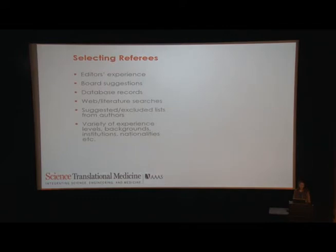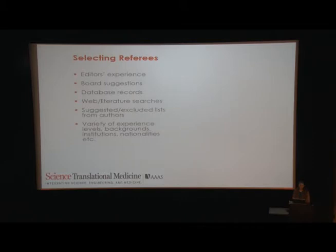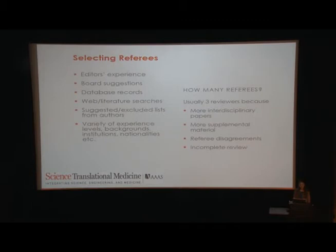How do we go about selecting appropriate referees for your paper? This is based on editor experience, suggestions from our board, database records, literature searches, and conferences. We try to capture people with a variety of expertise at different levels who can provide different insights into the paper. How many referees? We go for at least three. Three is a good number because this can capture the different disciplines included in your paper, provides enough people to look at all aspects, and can be very helpful when there are split reviews.